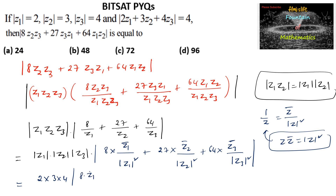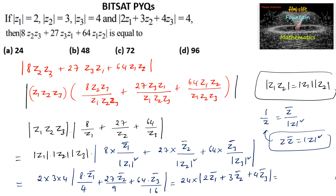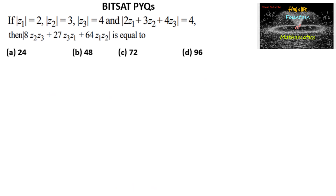Substituting: 8z̄1 divided by |z1|² = 4 gives 2z̄1, and 27z̄2 divided by |z2|² = 9 gives 3z̄2, and 64z̄3 divided by |z3|² = 16 gives 4z̄3. So the expression becomes |z1z2z3| times |2z̄1 + 3z̄2 + 4z̄3|, which equals 24 times |2z̄1 + 3z̄2 + 4z̄3|.